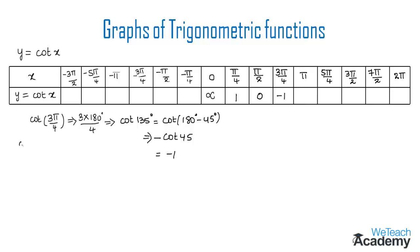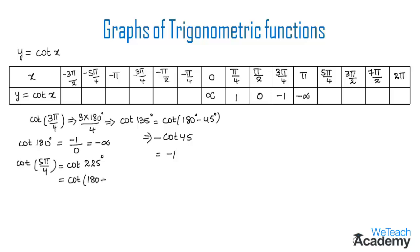The next radian is π. So cot(180°) = cos(180°)/sin(180°) = −1/0 = −∞. So we get −infinity at x = π. For 5π/4: cot(5π/4) = cot(225°) = cot(180° + 45°). This is in the form cot(180° + θ) = cot(θ), so we get cot(45°) = 1.